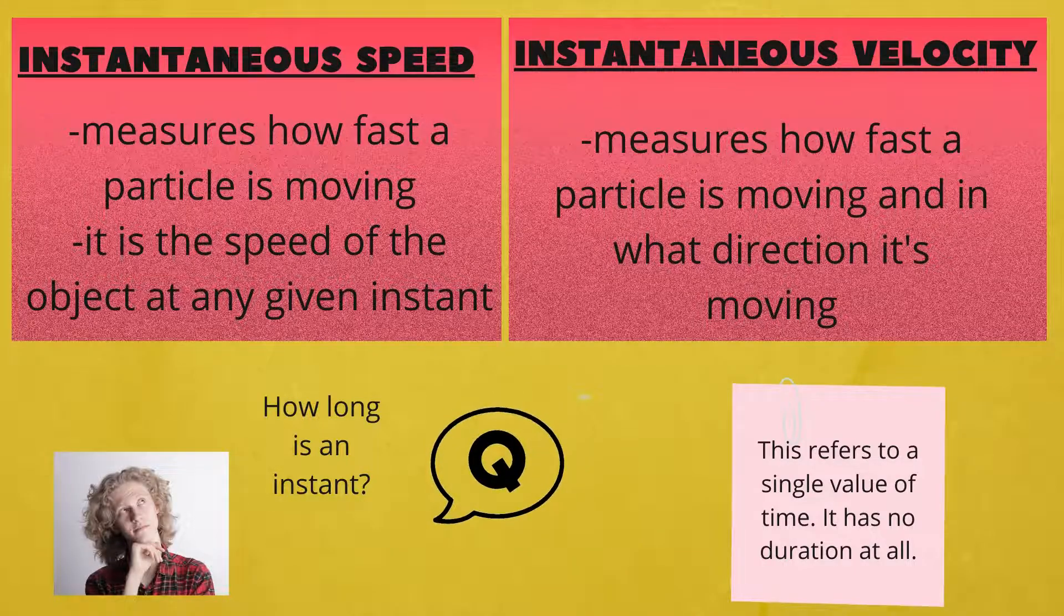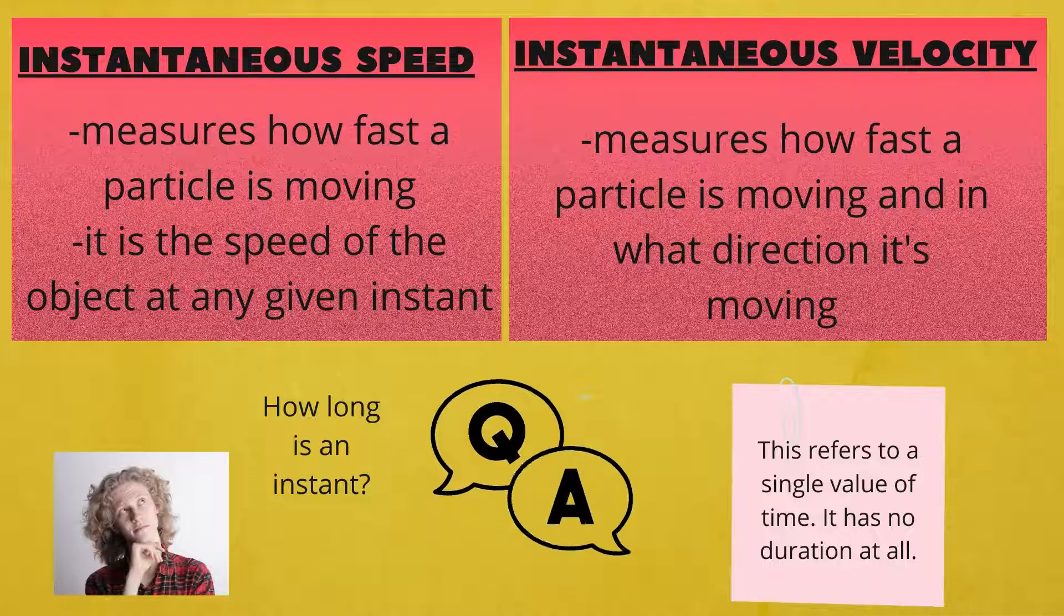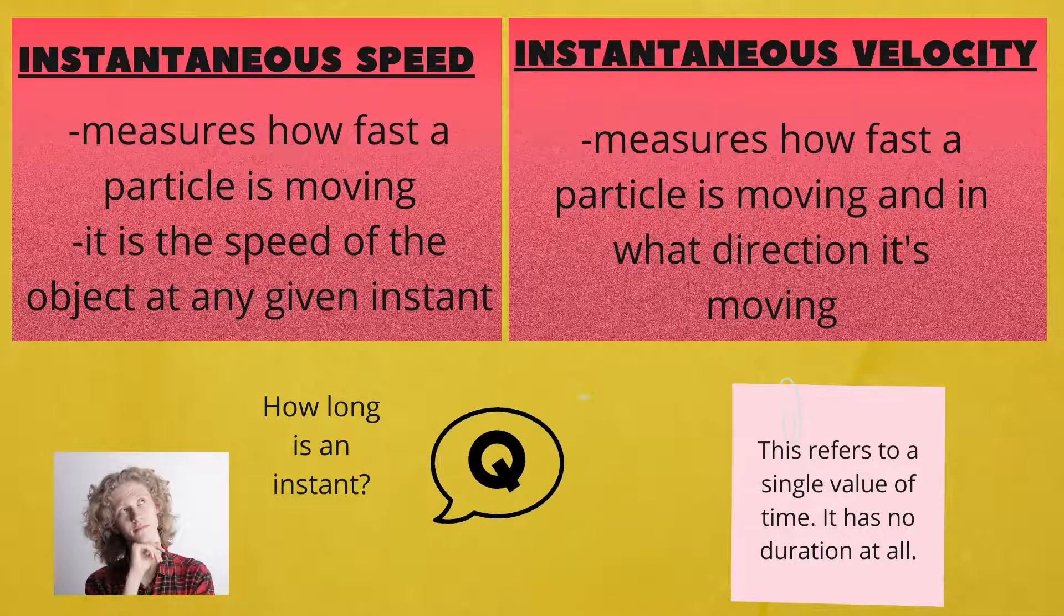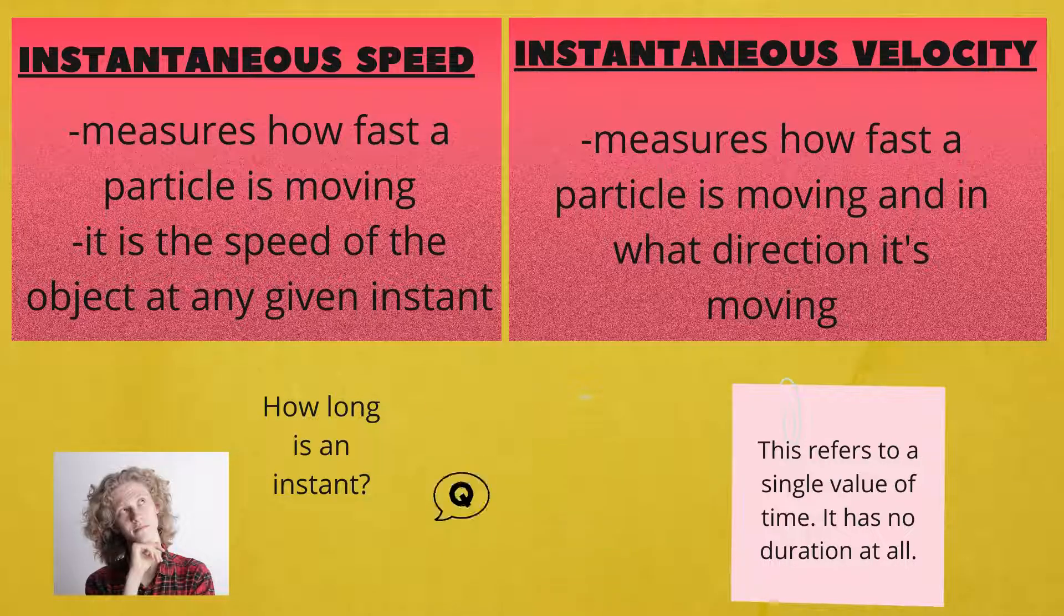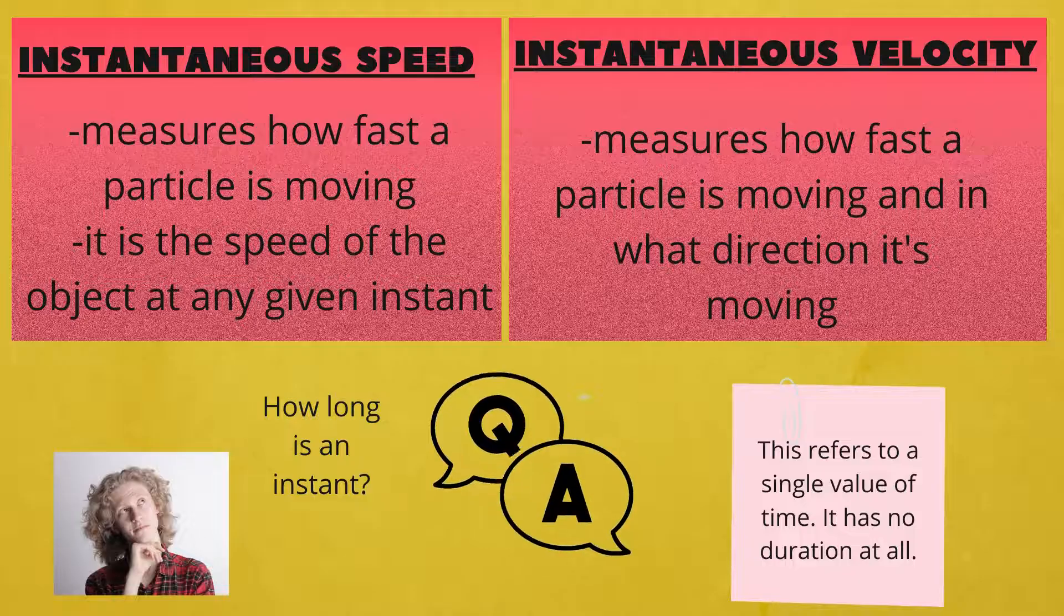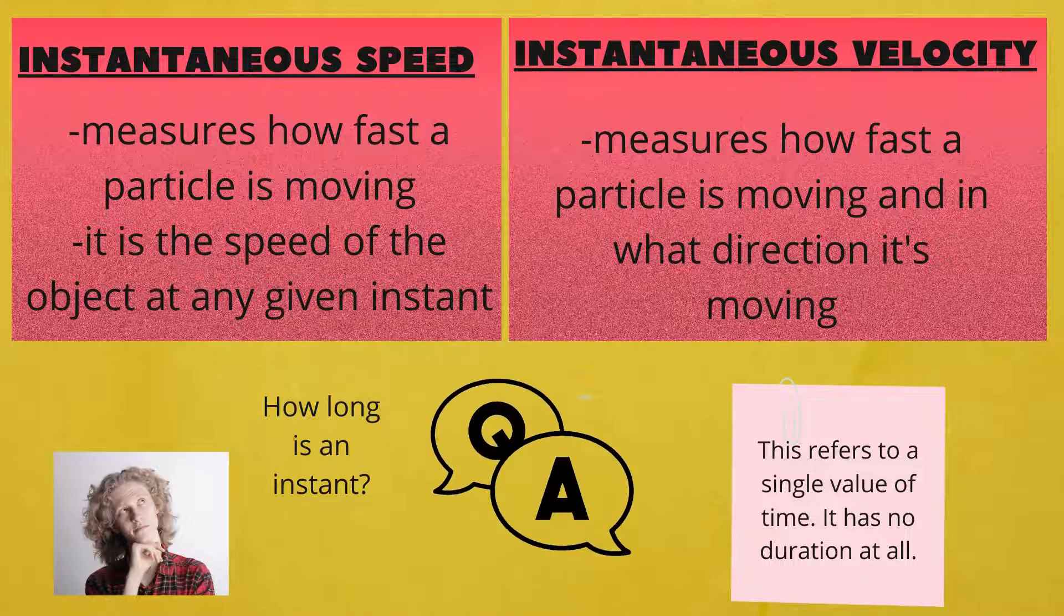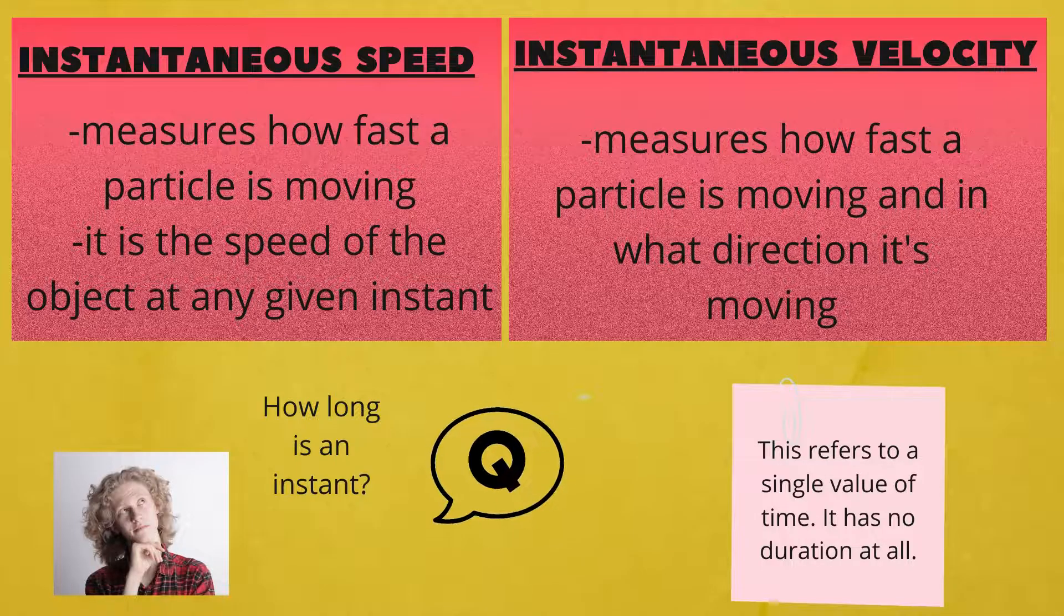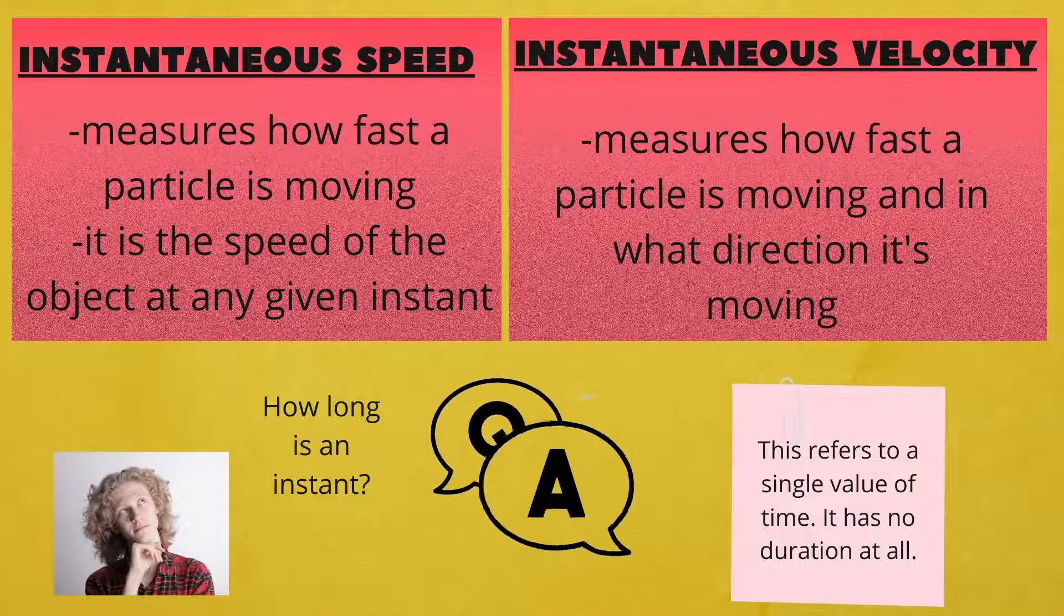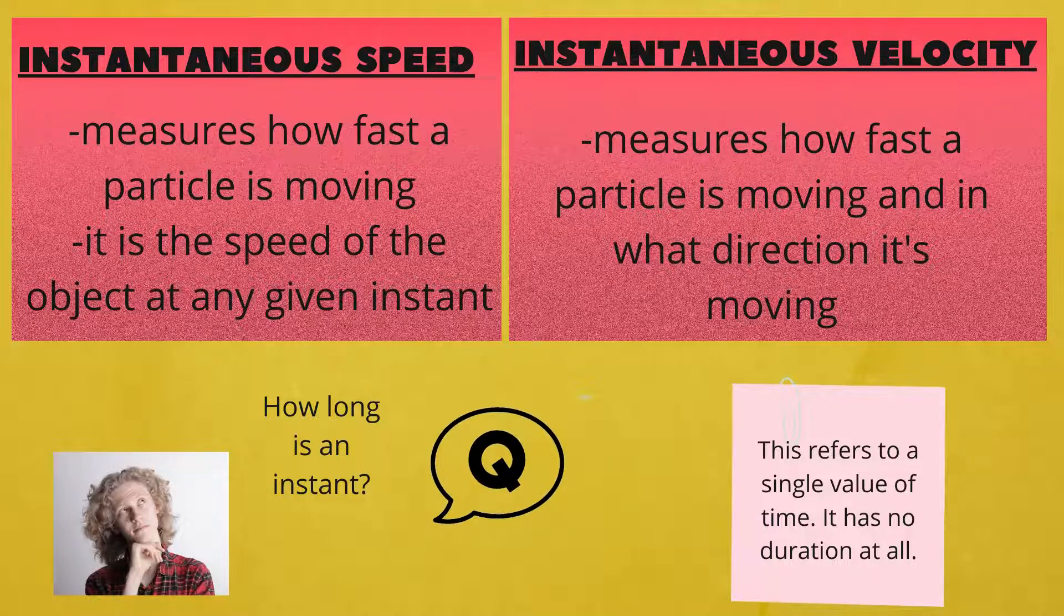Instantaneous speed is defined as the measure of how fast a particle is moving. It is the speed of the object at any given instant. But the question is, how long is an instant? In physics, this refers to a single value of time. It has no duration at all.